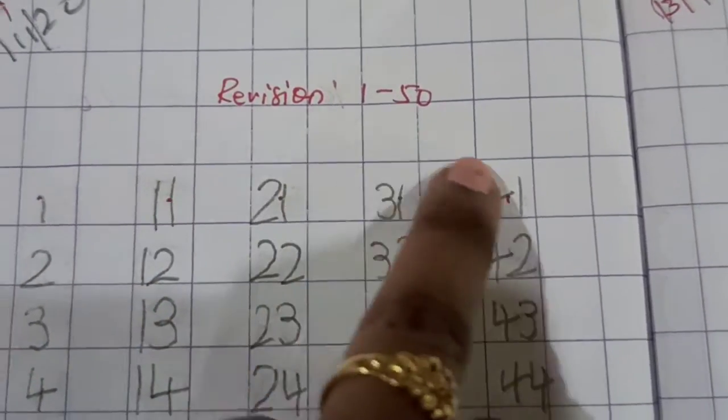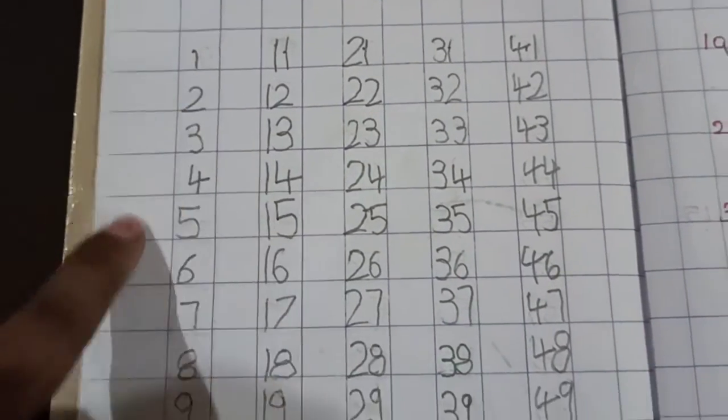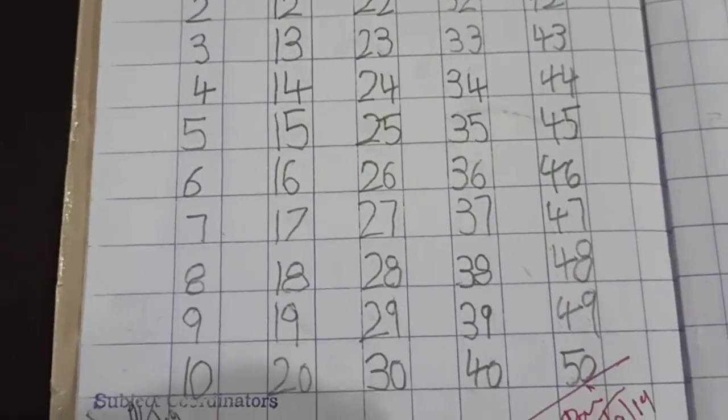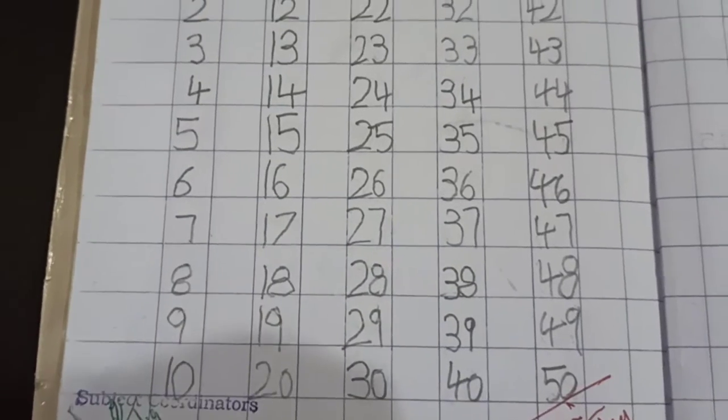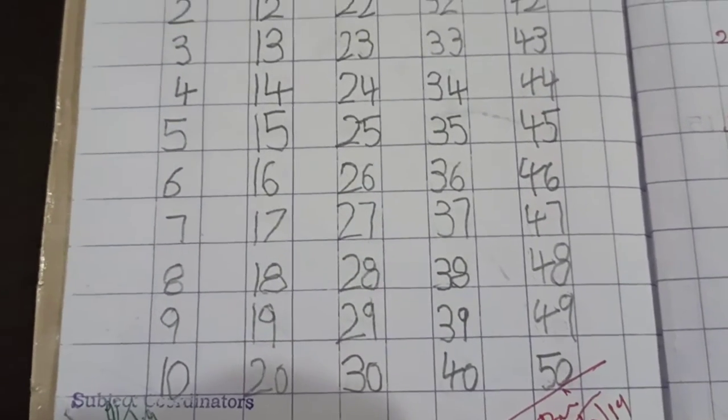Write a heading here: Revision 1 to 50. Child have to write like this.